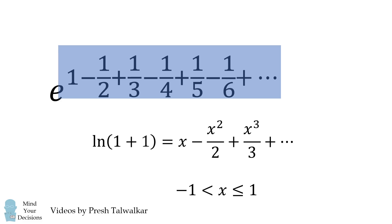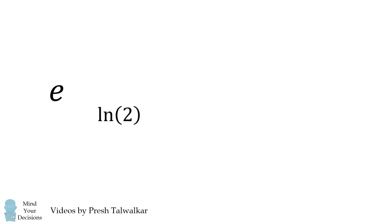Substitute x is equal to 1, and we get the alternating harmonic series is equal to the natural log of 2. That's the value of the exponent. So we have e to the power of the natural log of 2, which of course is equal to 2.